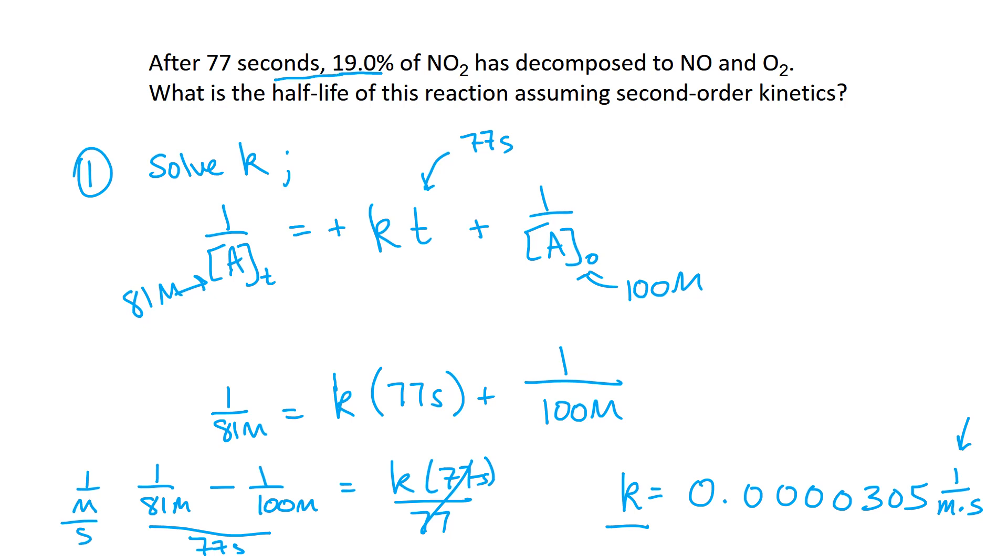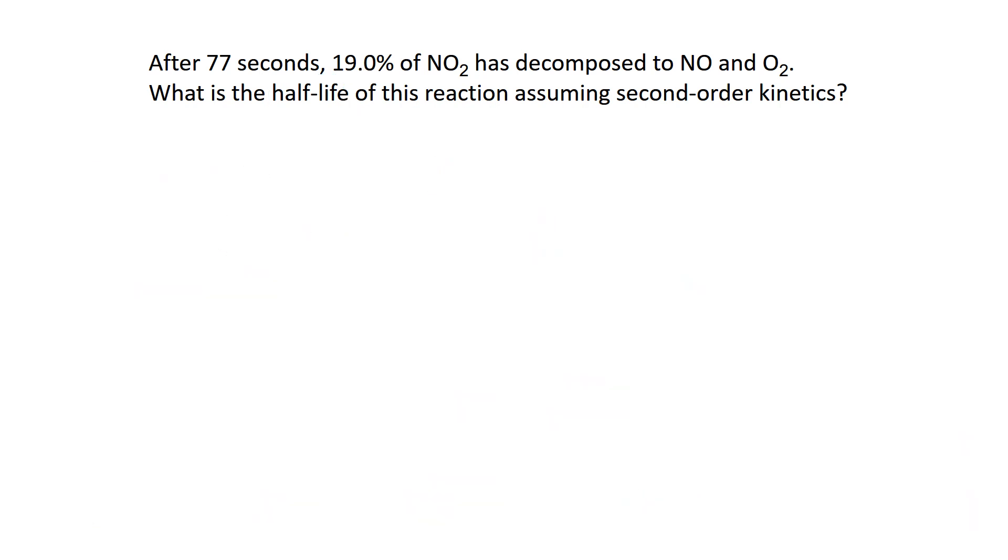The question asks us, what is the half-life? So I need to go back now to the half-life problem, use this K that I find, and plug that into the equation. So second step is to use the half-life equation. So time one-half equals 1 over K times the concentration of the reactants with the initial concentration. So concentration of NO2 initially.